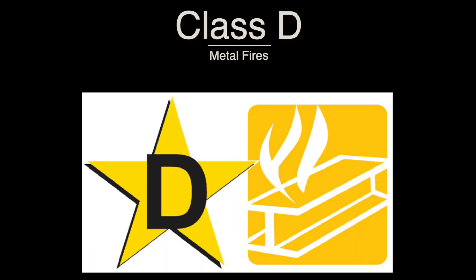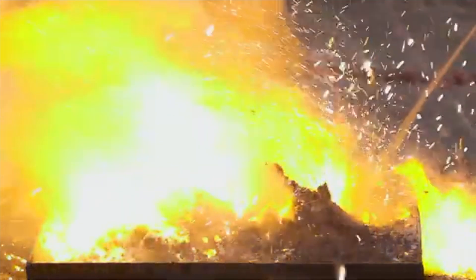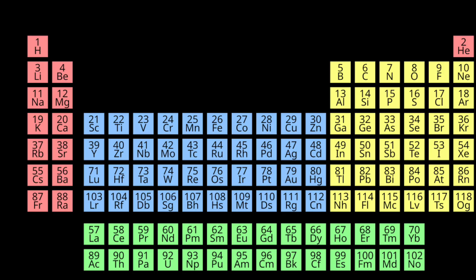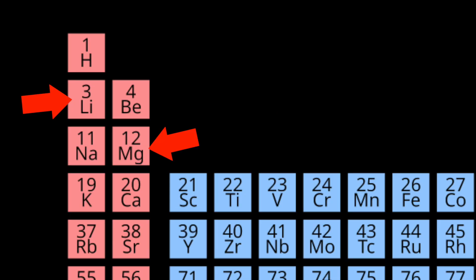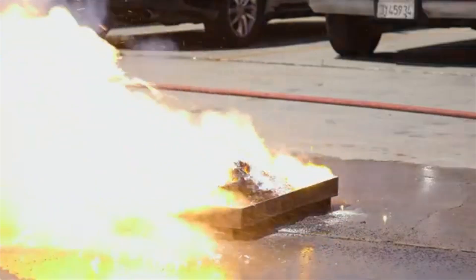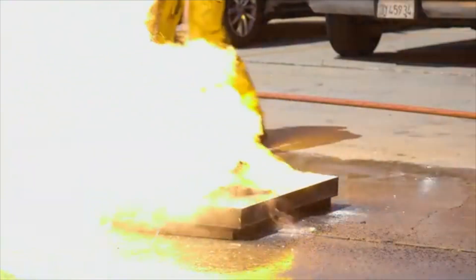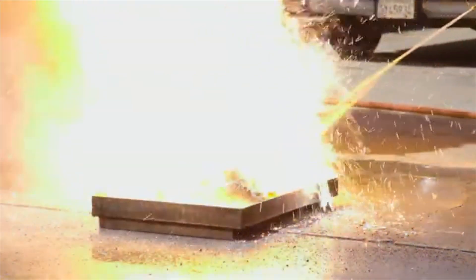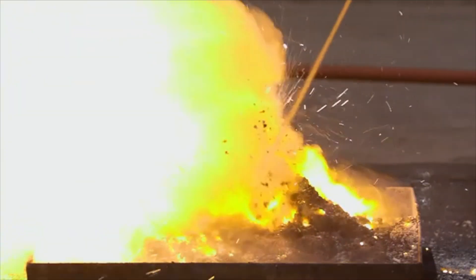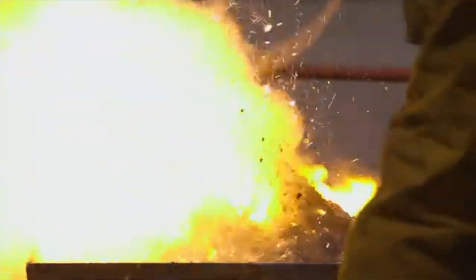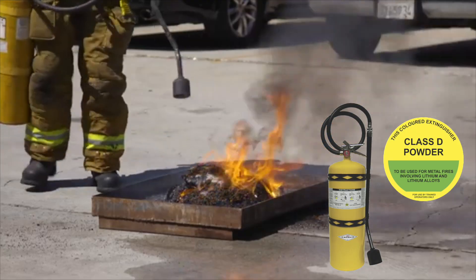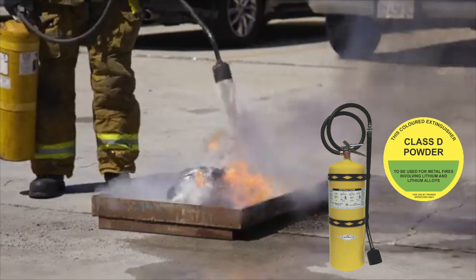Moving on to Class D metal fires, these types of fires are classified by their combustible metal fuel source, which includes lithium, magnesium, potassium, and titanium. Water is avoided once again, as contact with many of these metals can cause violent chemical reactions and spread the flames. Because of this, these types of fires are typically fought with various non-reactive dry powder extinguishing agents which suppress the fire's oxygen supply.